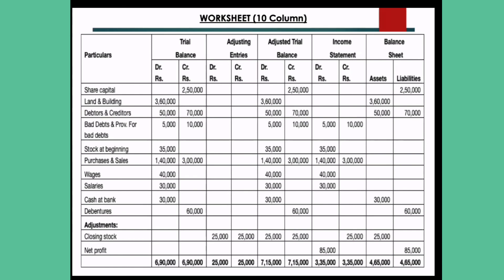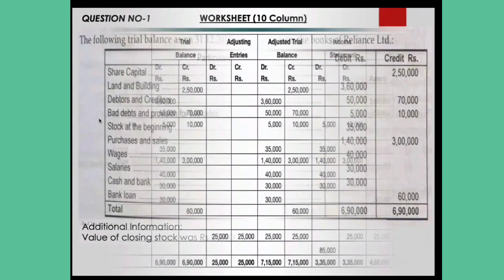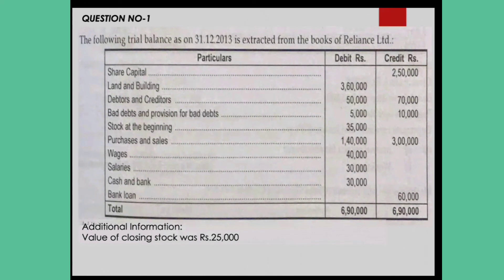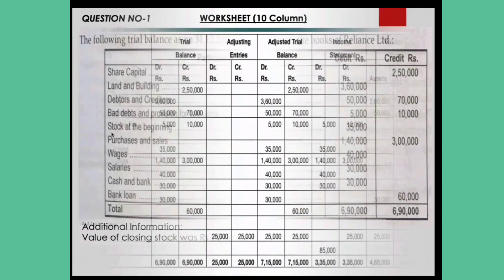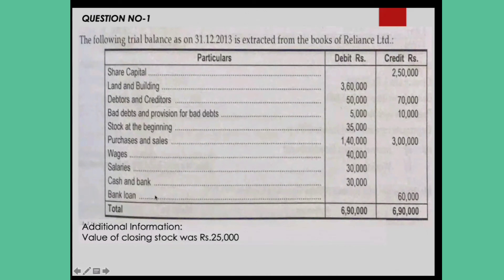Draw the same format in your copy. For a 12-column worksheet format, the first thing is to write the particulars. Whatever particulars are there, write them under the particulars heading. Copy and paste the same particulars — this includes total as well.